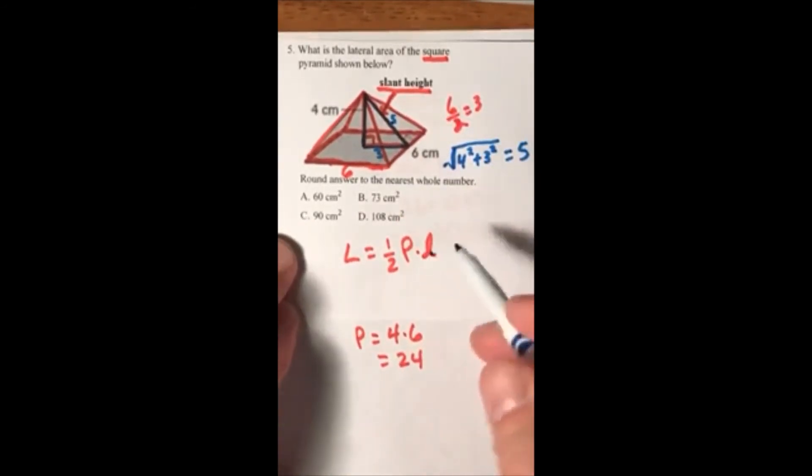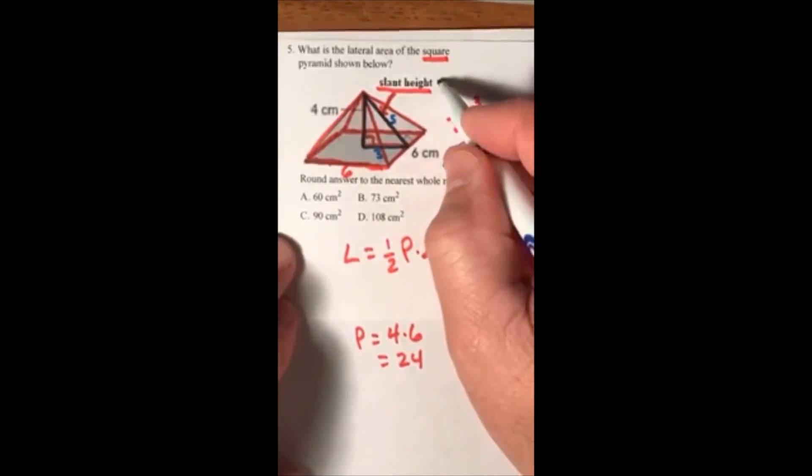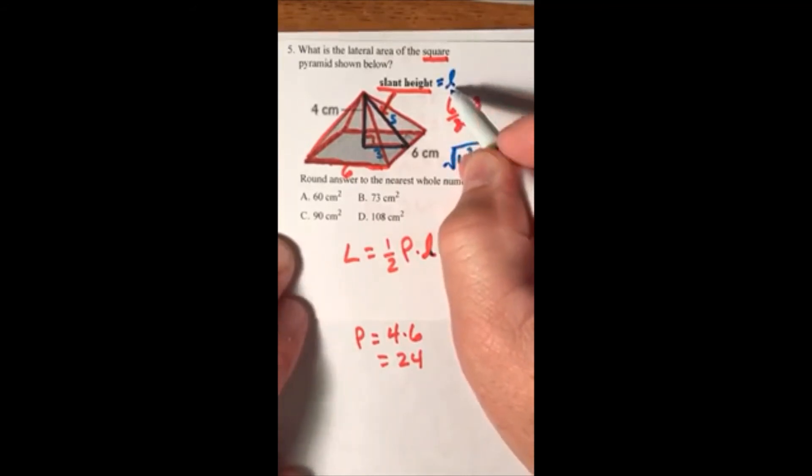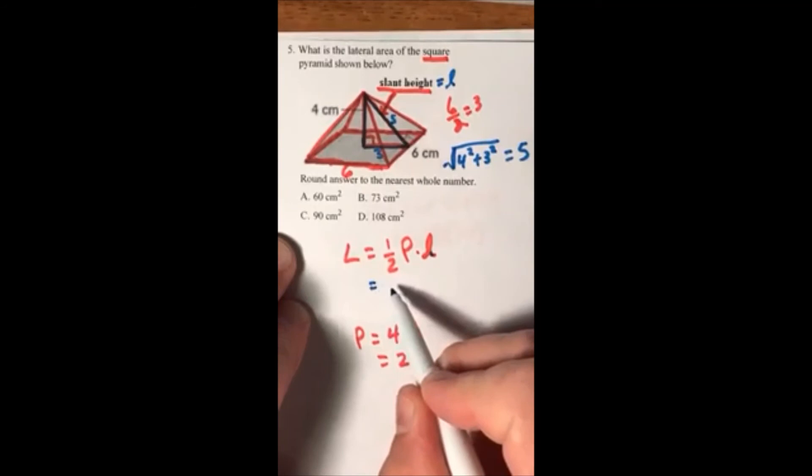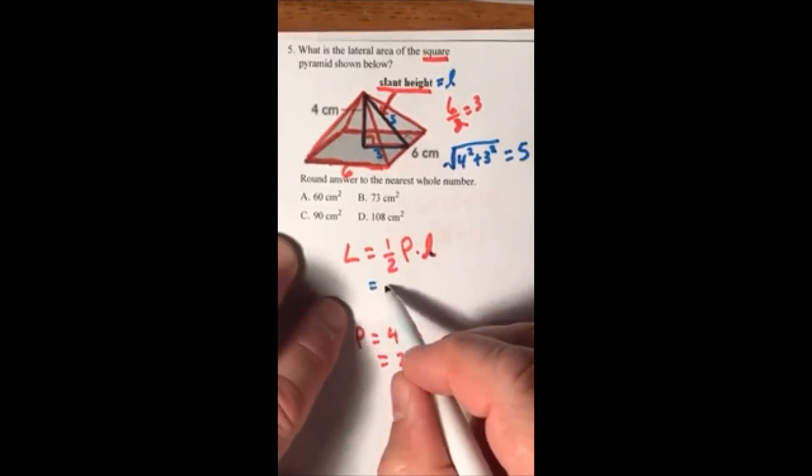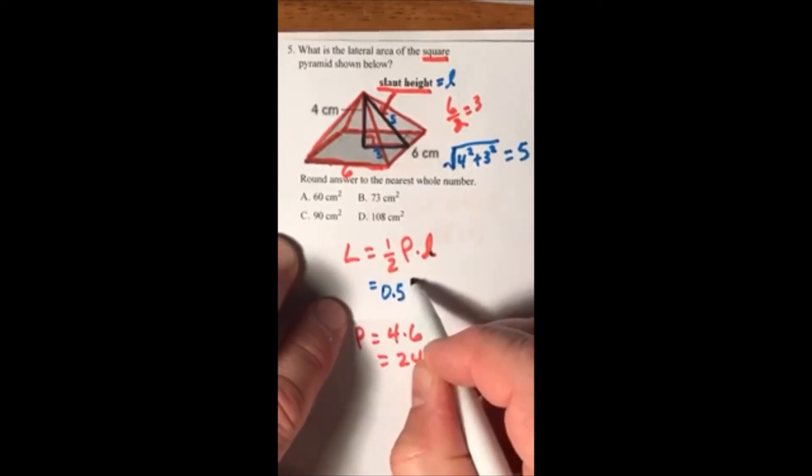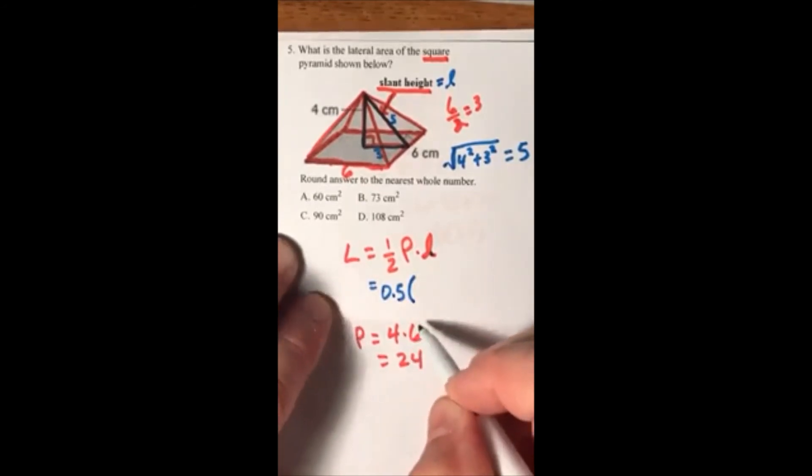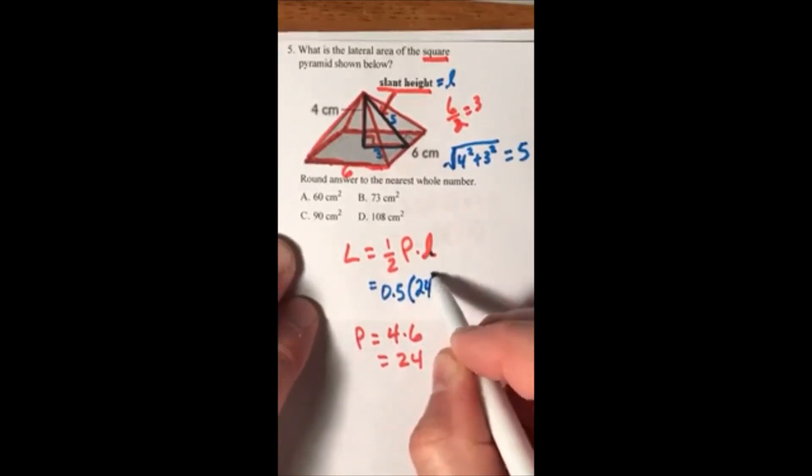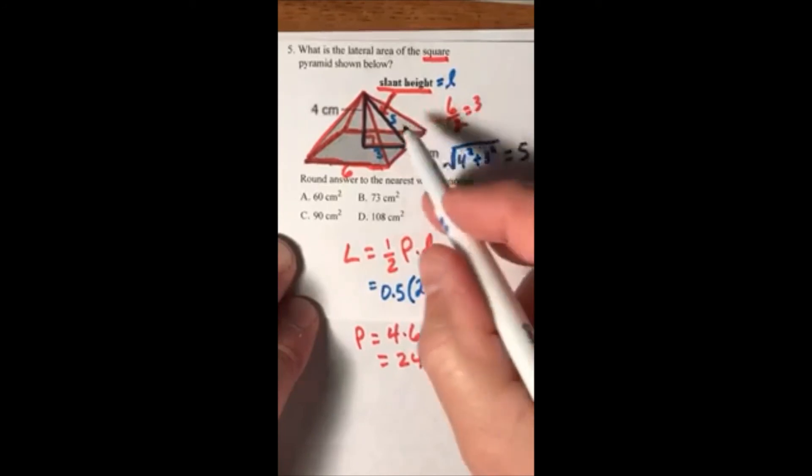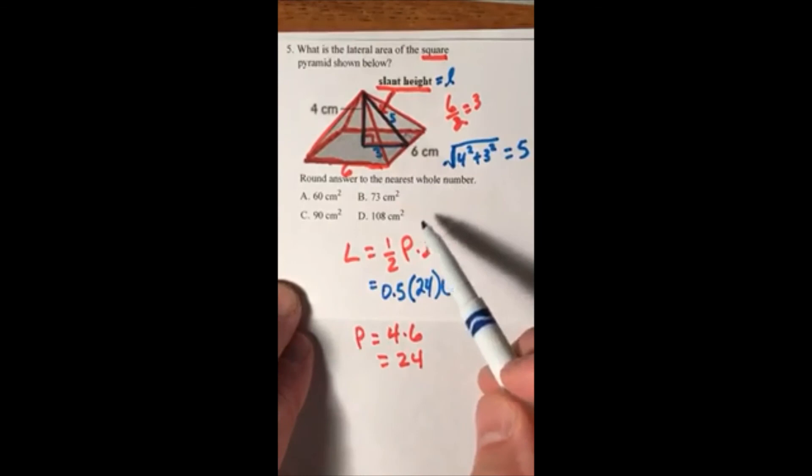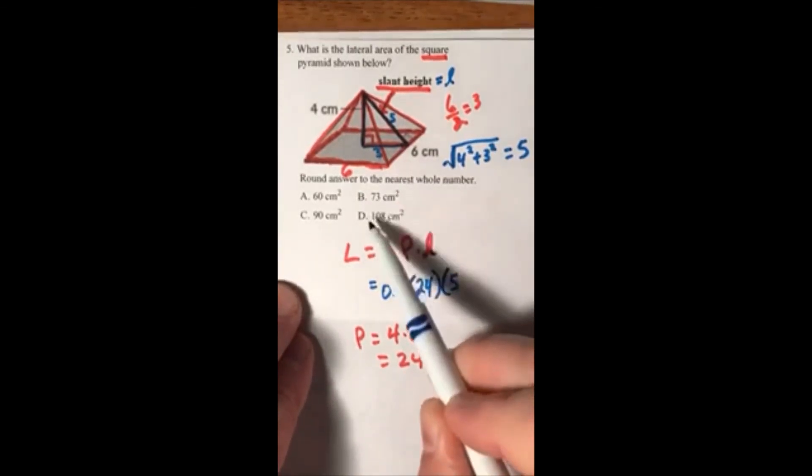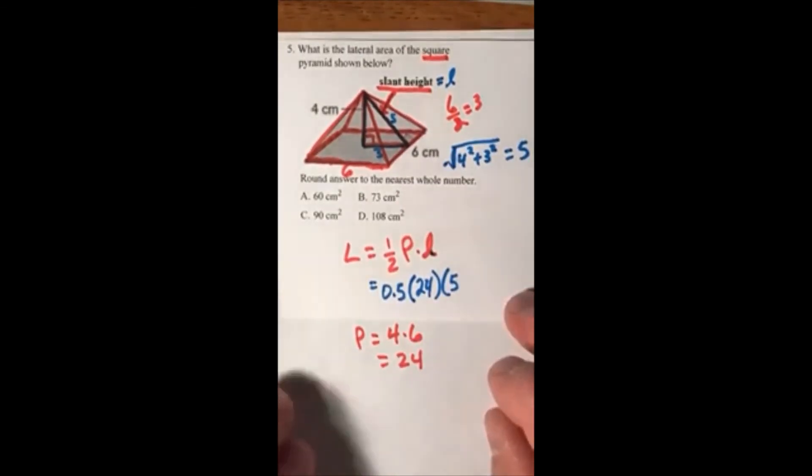Now we know the slant height is 5. That'll go right here for L. Coming back over, I like to work with a decimal here, so 0.5 times 24 times my slant height, which is 5. Round to the nearest whole number. So if you have a decimal, round up or down to get a whole number. Now finish this up.